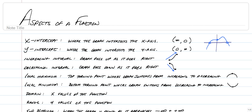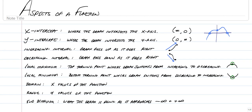Local maximums and local minimums — that's basically just a turning point. You've probably heard it also called a vertex at times, which is also true at some points. So the top or the bottom of a graph when it's curving, those would be considered local maximums and local minimums. There is such a thing as an absolute max or an absolute min, and we will talk about those when we get to them.